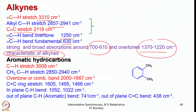In case of aromatic hydrocarbons, the aromatic C–H stretch appears around 3008 cm⁻¹, alkyl C–H stretch around 2850 to 2940 cm⁻¹, and overtone or combination bands in the range 2000 to 1667 cm⁻¹. C=C in the ring has stretching frequencies around 1605, 1495, and 1466 cm⁻¹. In-plane C–H bend is at 1052 and 1022 cm⁻¹, out-of-plane aromatic C–H bend is around 741 cm⁻¹, and out-of-plane C=C bend is at 438 cm⁻¹.